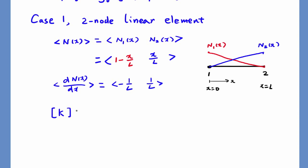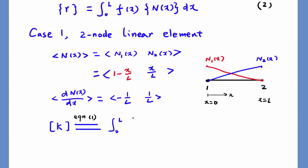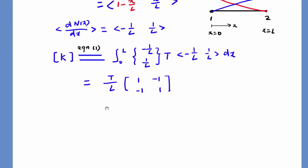Plug this into equation number 1. We perform integration from 0 to L: column first derivative times T times row first derivative of shape function. We can find the K matrix is equal to this 2 by 2 matrix for an element with length L.